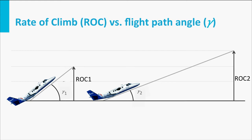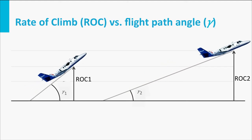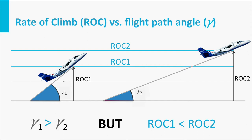Even though these two parameters are related to each other, the condition for maximum climb angle is not the same as the condition for maximum climb rate. As you can observe in the animation, the aircraft on the right-hand side reaches a higher altitude in the same amount of time because the rate of climb is larger. However, the climb angle of the aircraft on the left is larger than the one on the right. But since the magnitude of the airspeed vector on the right-hand side is larger, the combination of V times sine of gamma is larger as well. When would you prefer a large climb angle and when would you prefer a large rate of climb?